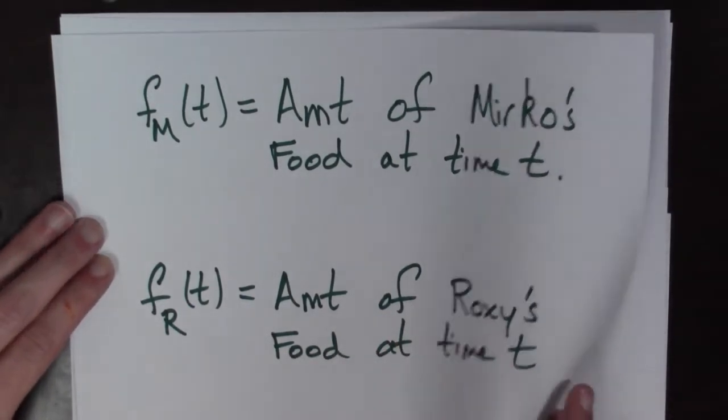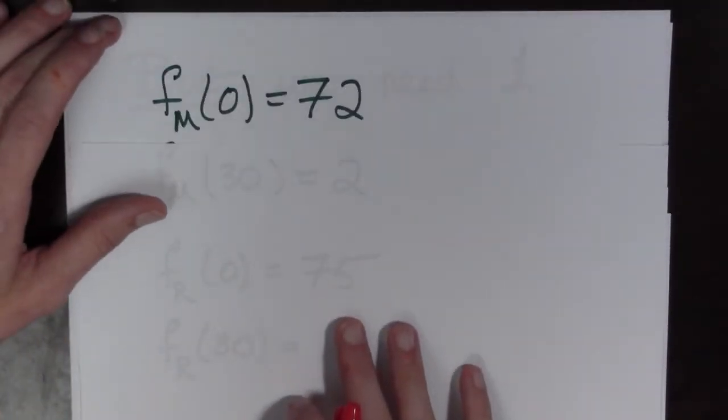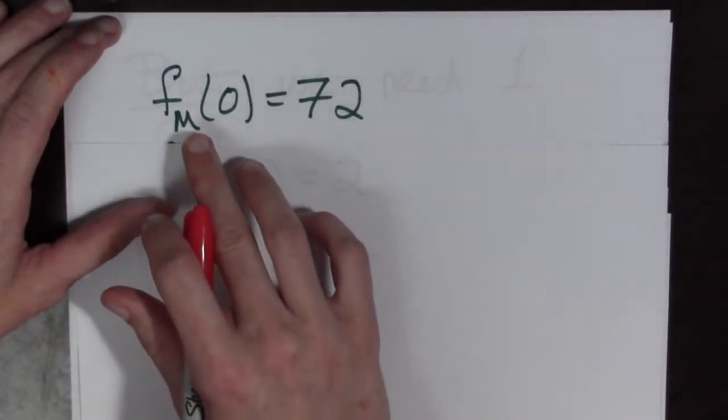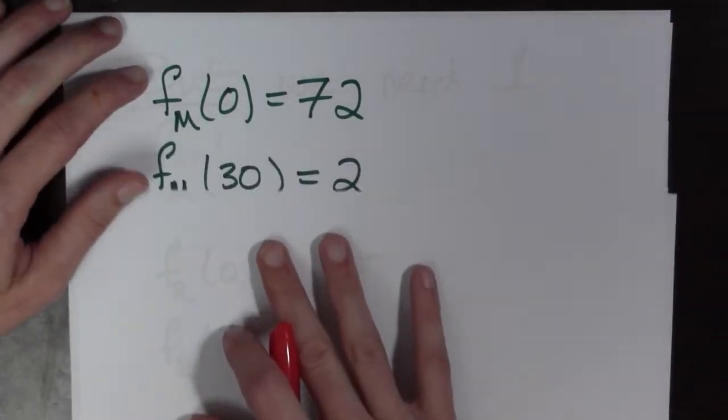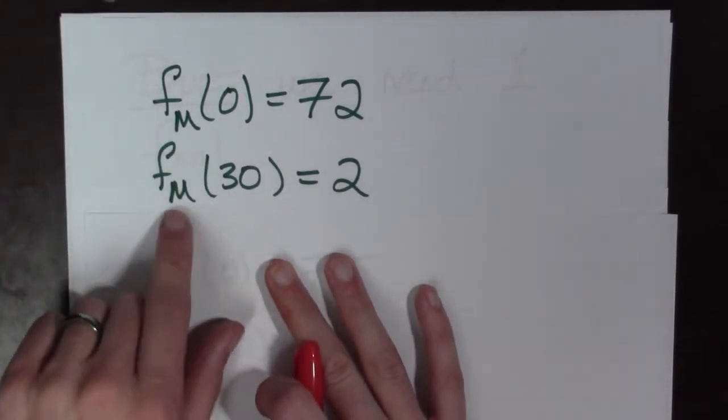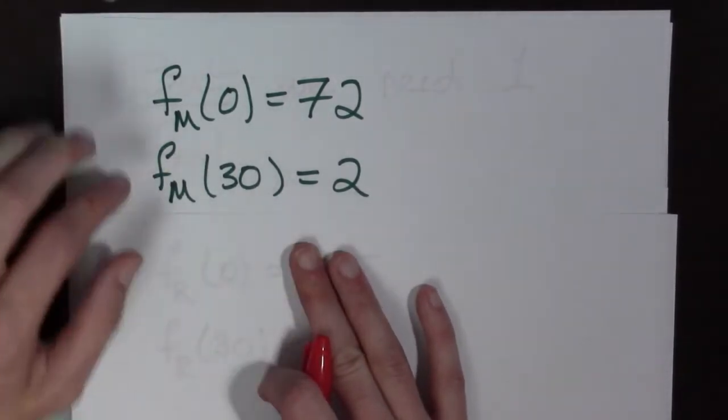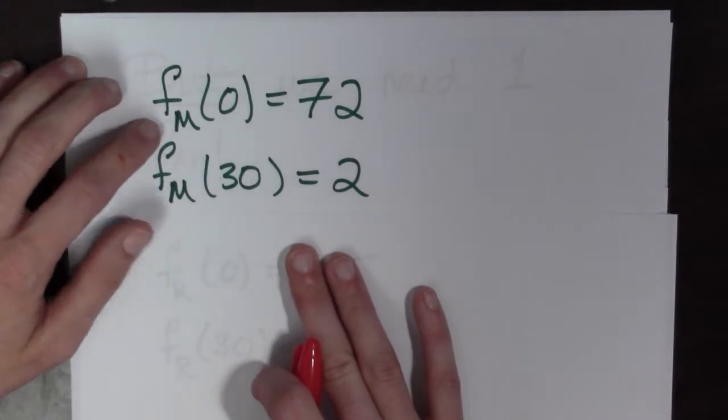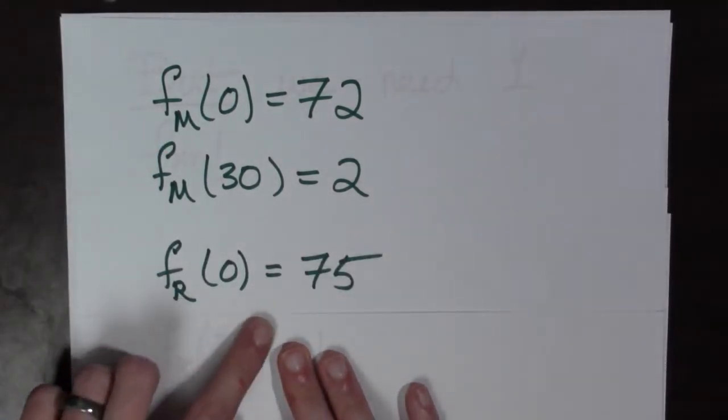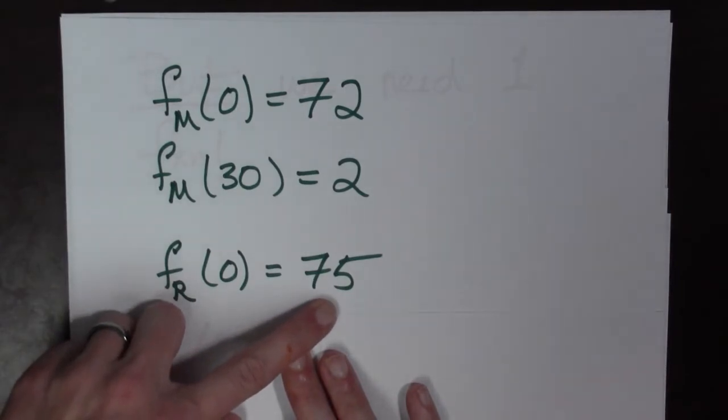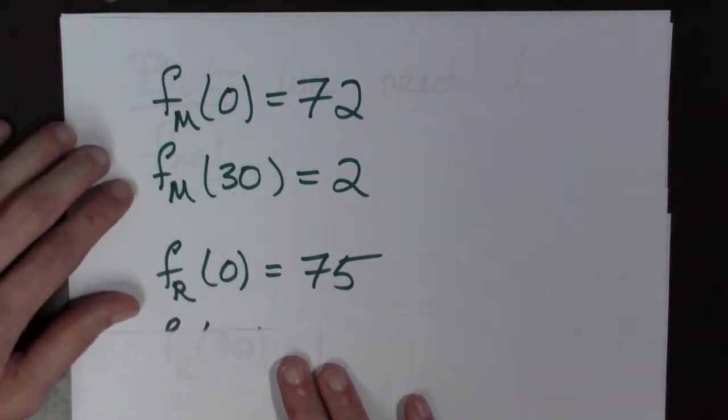Now we know something from our setup of the problem. We know that f_m(0) = 72 - Medical started with 72 grams of wet food. And at the end of 30 seconds, Medical had 2 grams of wet food left over, so f_m(30) = 2. Now Roxy, on the other hand, started with 75 grams of wet food, and after 30 seconds she had 1 gram left over.